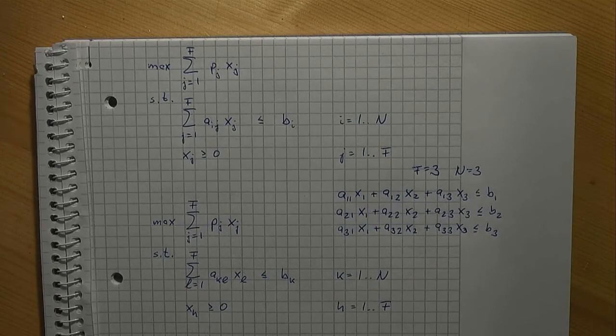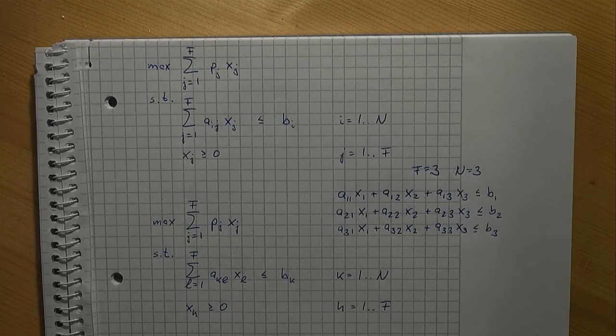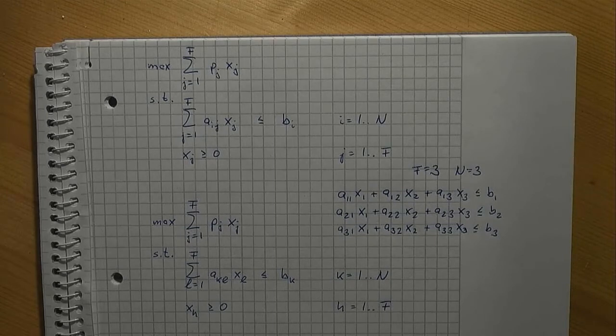Now, do the same for the second model and check what you get for k equals one when l runs from one to three, for k equals two and for k equals three. You will see that indeed the very same constraints show up.